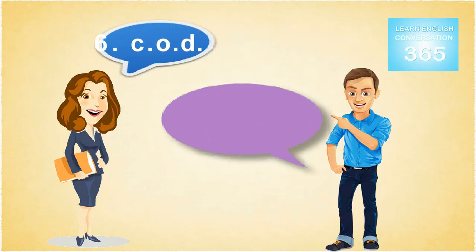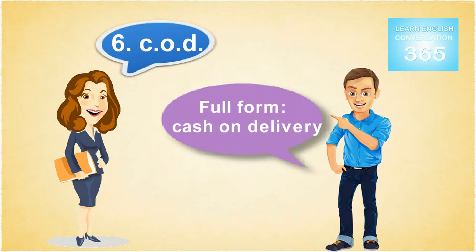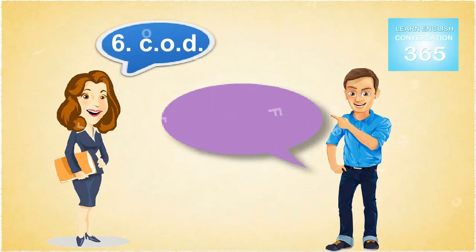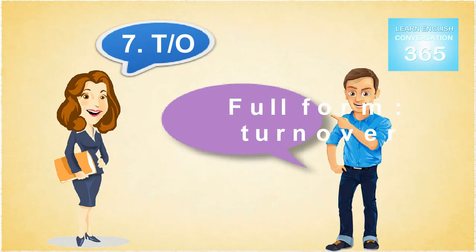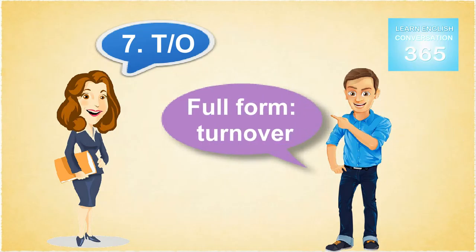6. COD — Full Form: Cash on Delivery. 7. TO — Full Form: Turnover.